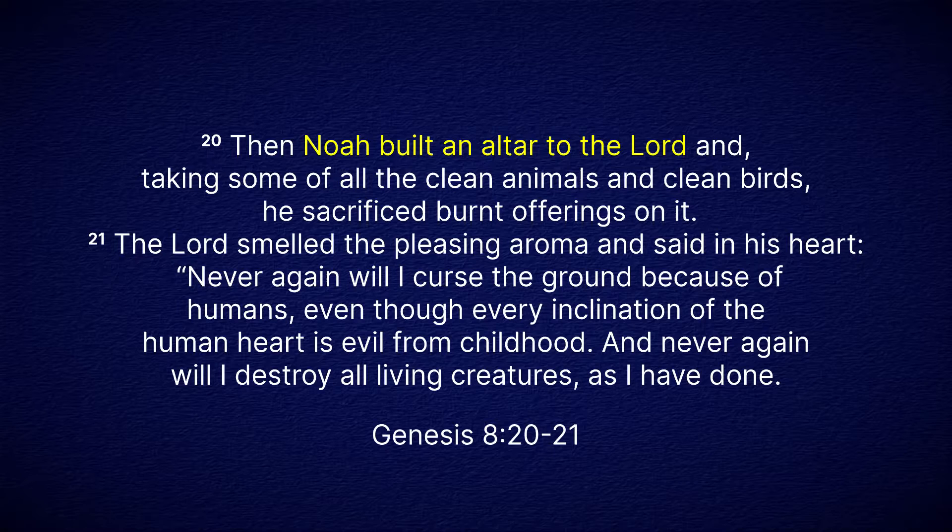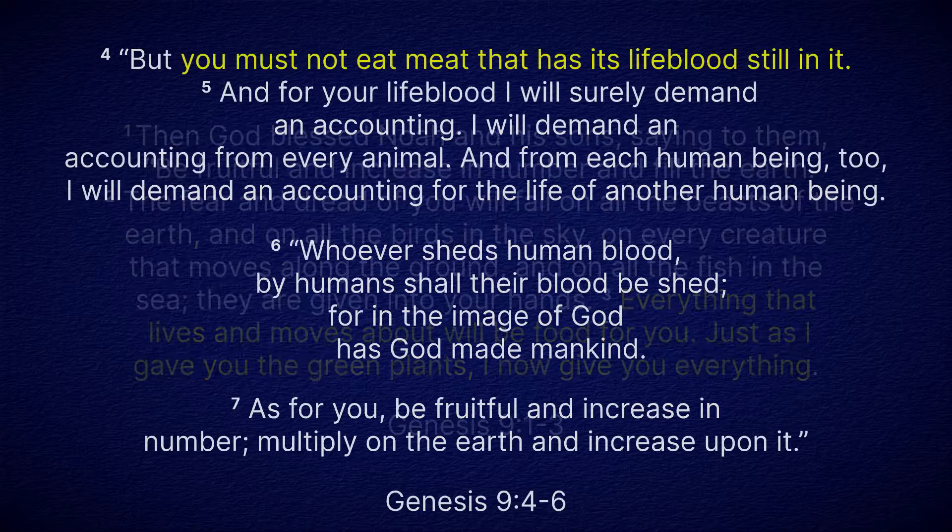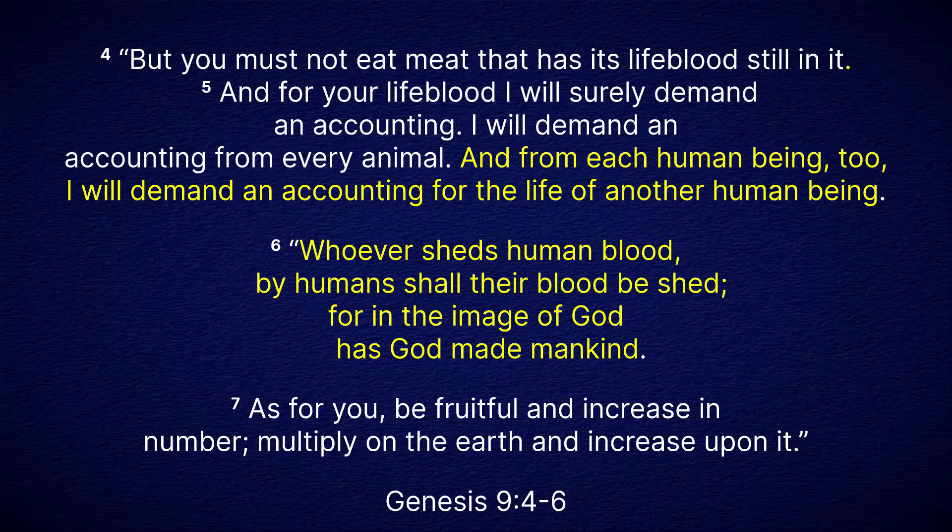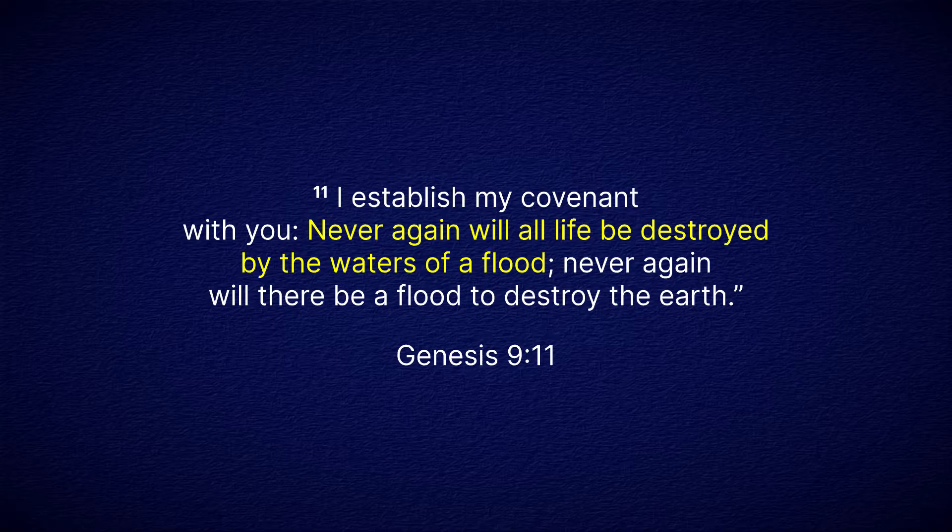Following the global flood in Genesis 6 and 7, the waters recede and Noah and his family exit the ark. Noah builds an altar and offers sacrifice to God, and God blesses Noah and his family. God proceeds to make a covenant with Noah. Noah and his sons will be given dominion over the earth, but they must not eat the blood of an animal. They must be fruitful and multiply, and they cannot kill another human being. God then states his side of the covenant, that he will never again destroy the earth by flood.